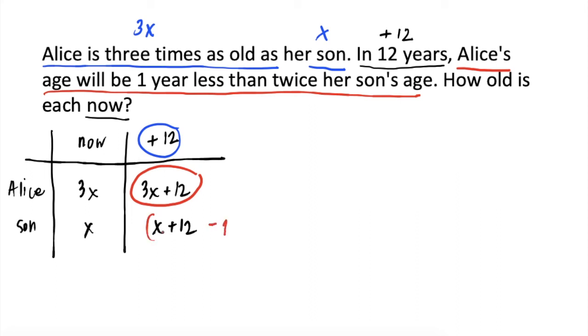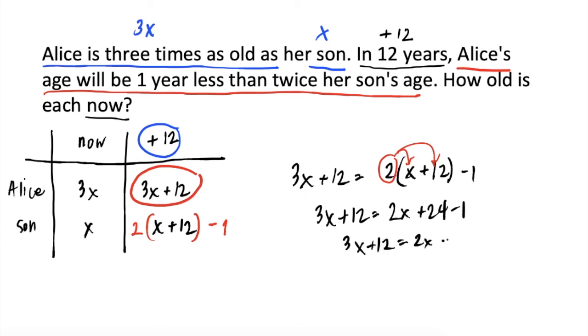So, ibig sabihin, we will subtract one from two times ng age ng son. So, let natin in equation form, 3x plus 12 is equal to 2 times quantity x plus 12 minus 1. Distribute natin ang 2. We will get this. Then, simplify, 3x plus 12 is equal to 2x plus 23.